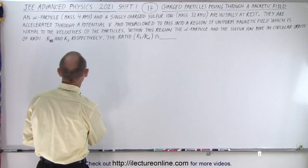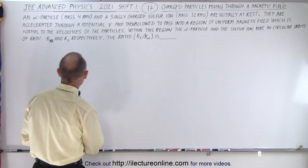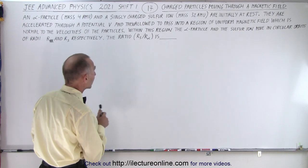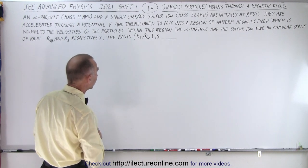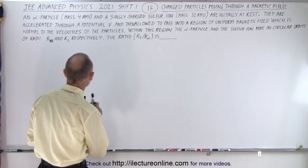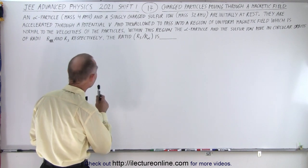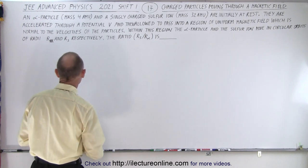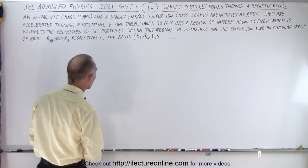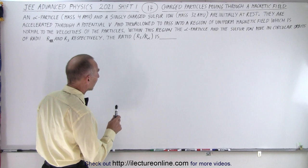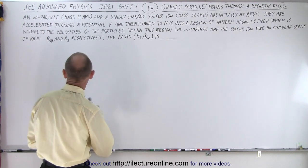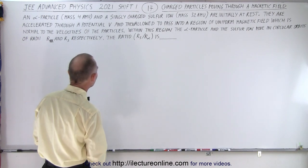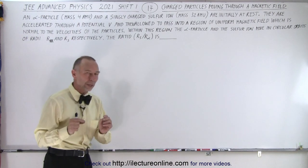The problem reads as follows: an alpha particle with a mass of 4 AMU and a singly charged sulfur ion with a mass of 32 AMU are initially at rest. They are accelerated through a potential difference V and then allowed to pass into a region of uniform magnetic field, which is normal to the velocities of the two particles. Within this region, the alpha particle and the sulfur ion move in circular orbits of radii RA and RS respectively, and we need to find the ratio of those two radii.